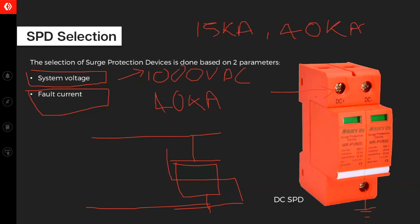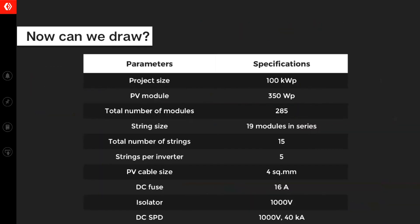Just to recap it all. We have a project size of 100 kilowatt. We are using a PV module of 350 watt peak. The total number of modules we calculated was 285. Then, the string size we calculated is 19. The total number of strings is 15. Then, we had 5 strings per inverter. PV cable size we tried with 4, we tried with 2, but we ended up with 6 square mm. DC fuses at 16 ampere. Isolator at 1000 volts and DC SPD at 1000 volt 40 kilo ampere.